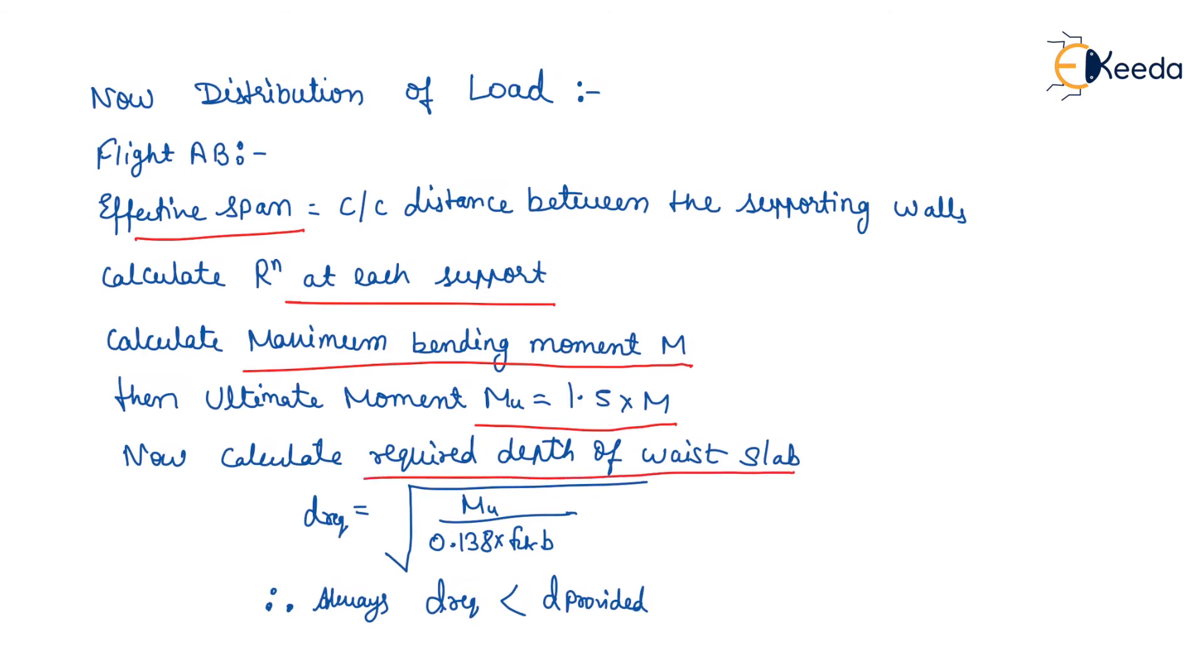D required equals √(Mu / (0.138 × fck × b)). Therefore, always D required will be less than D provided.